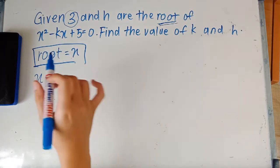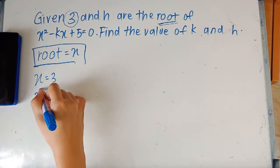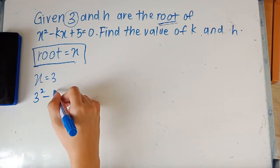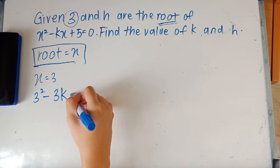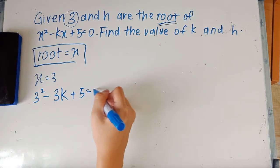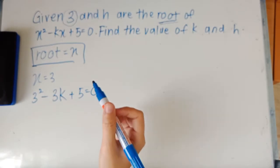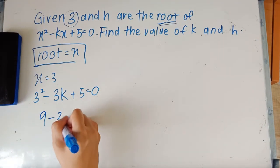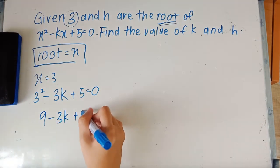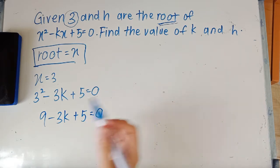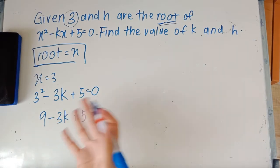So you're going to substitute x = 3 into this equation, so when you do that you'll get 3² - 3k + 5 = 0. So you'll get 9 - 3k + 5 = 0.